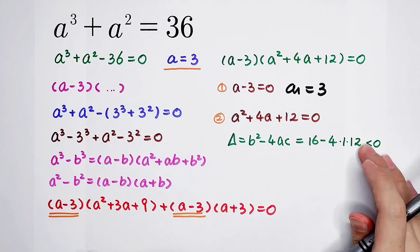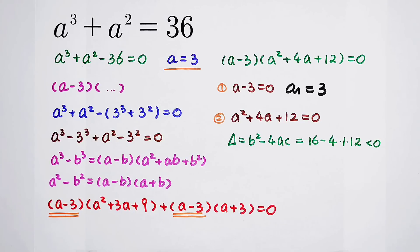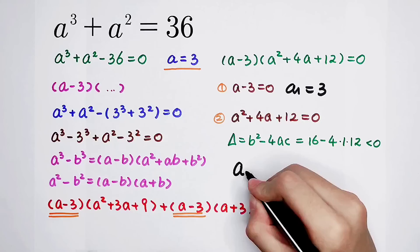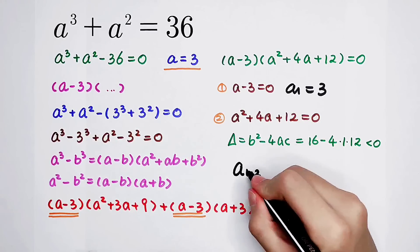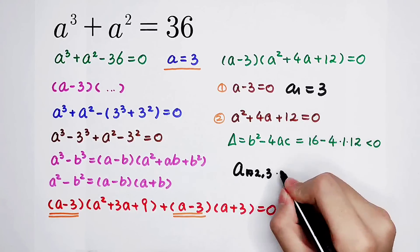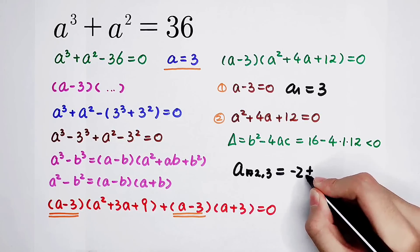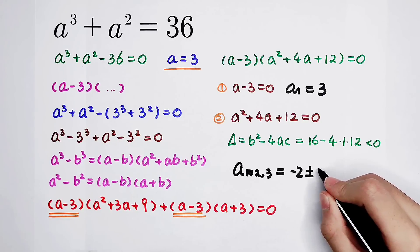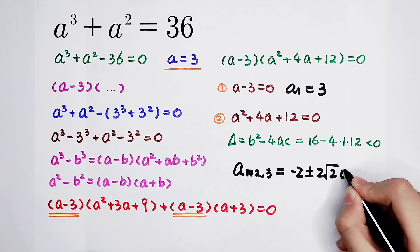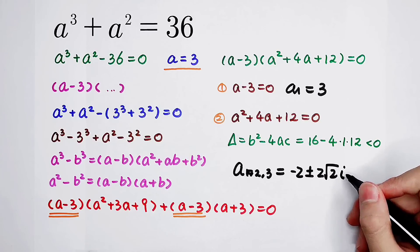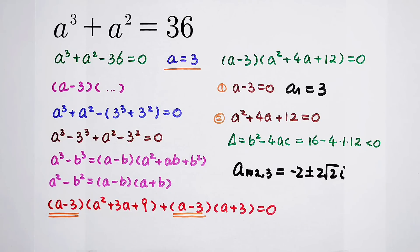There are no real roots in this case, so we have only one real root a equals 3. But from the second case, we can get the other two complex roots: minus 2 plus or minus 2 times square root 2 times i. So there are three roots of this equation but only one real root.